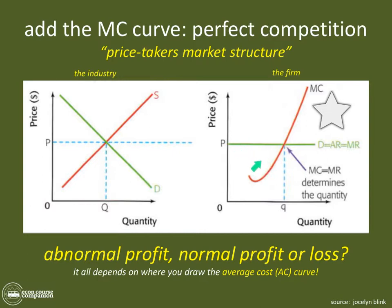If the average cost curve's low point on the MC curve is below the price point, this firm will make abnormal profits. If the average total cost curve comes down and has a tangential point at the MC intersection and extends up, then this firm will be making normal profit.